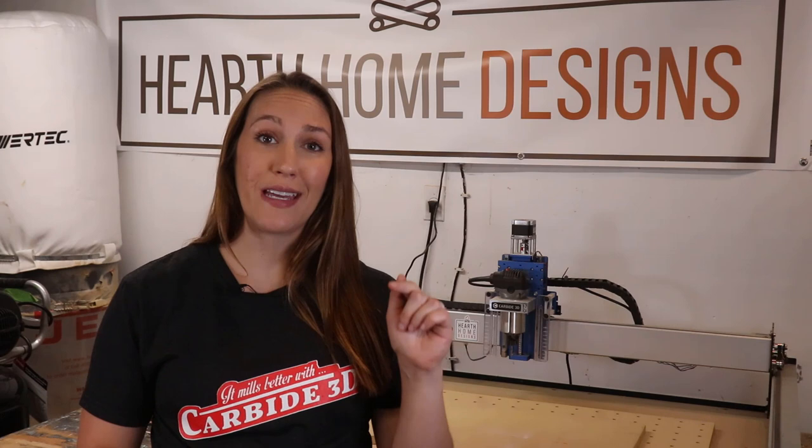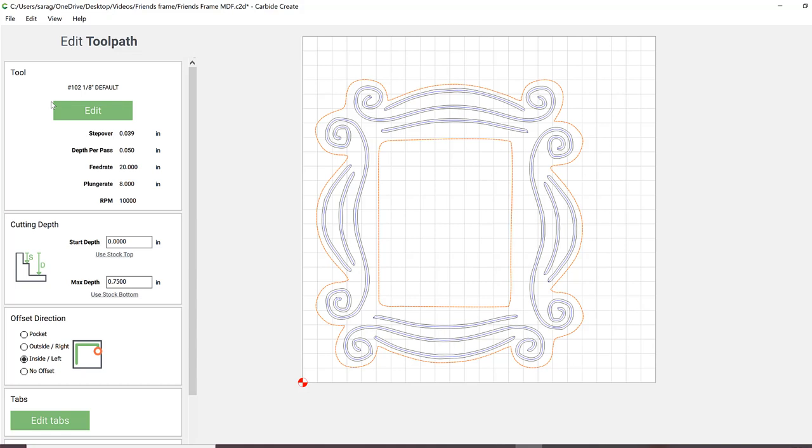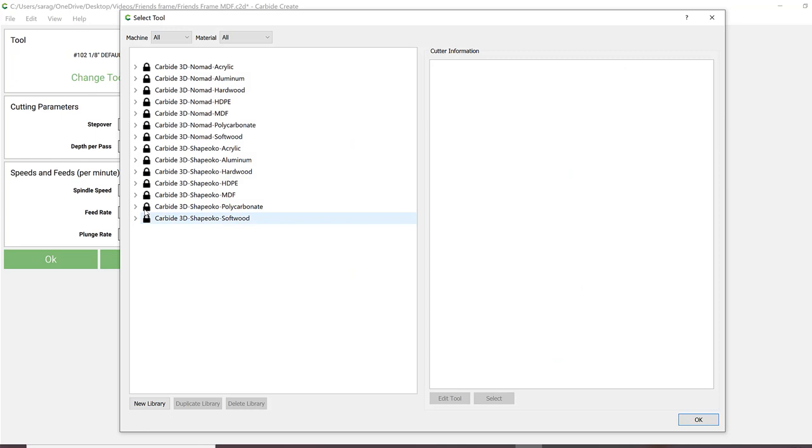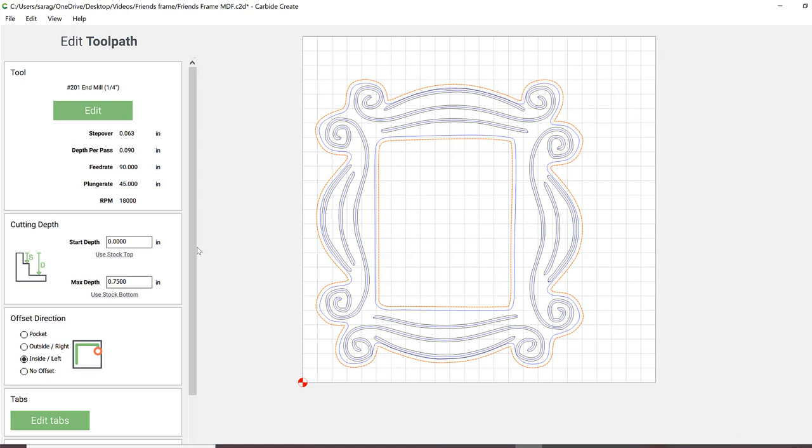You want to click the inside border and then the outside border, since the order that you click is actually how Carbide Create generates your toolpaths. Since I'm using a thicker material with less cutout detail, I'll be selecting Carbide's bit number 201, which is a quarter inch end mill to cut out the center and the frame itself.